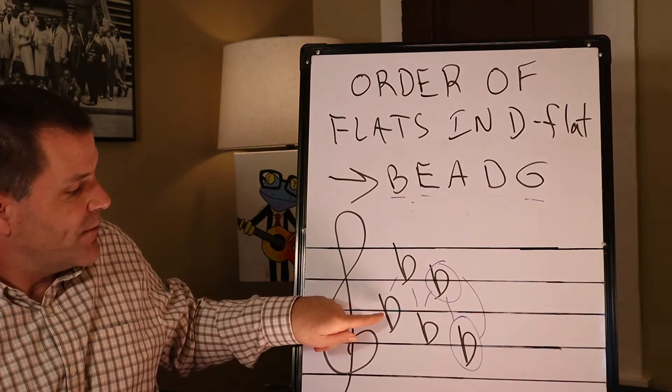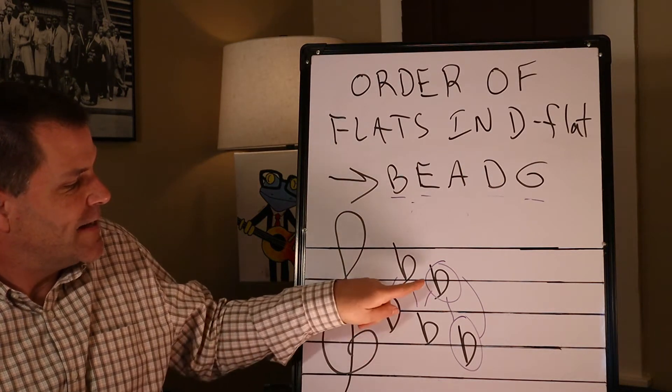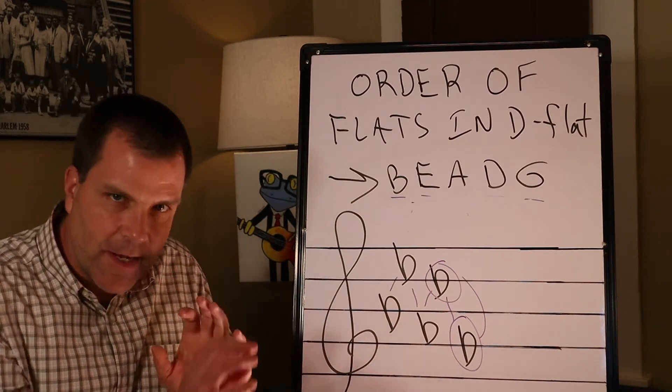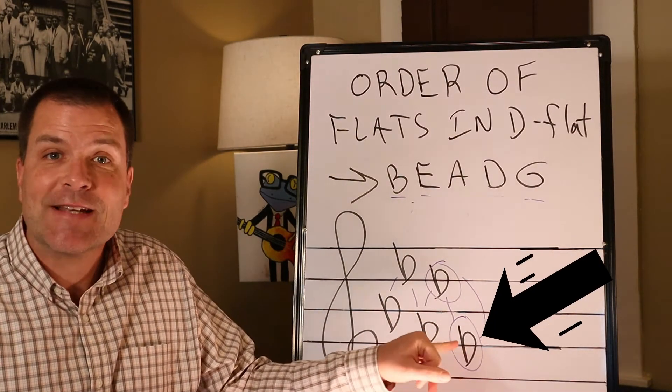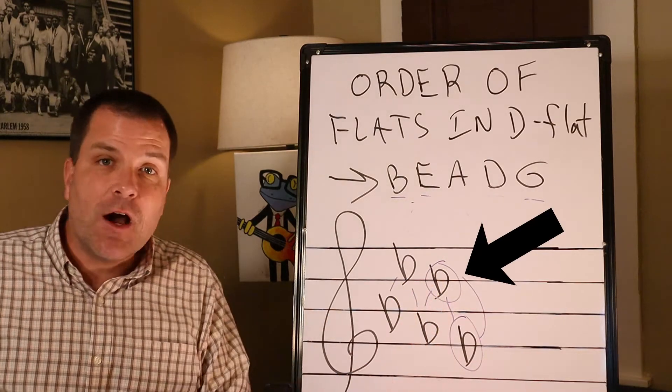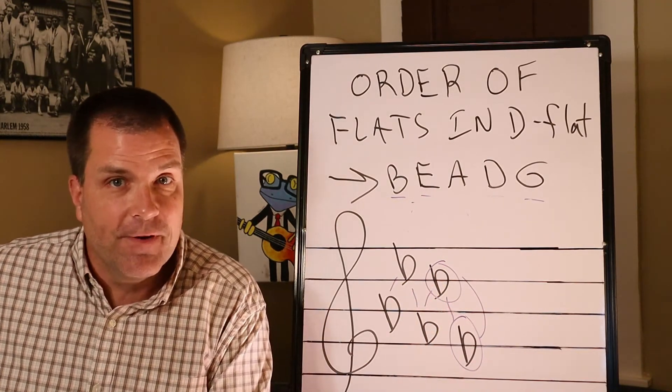So quickly, we have B-flat, E-flat, A-flat, D-flat, G-flat. Once you learn how to navigate that, it's simple. The rule is: go to the last flat, go back one, and we are in the key of D-flat.